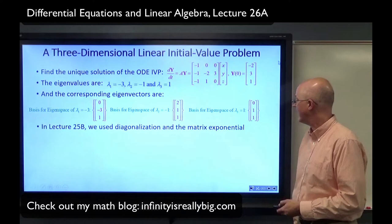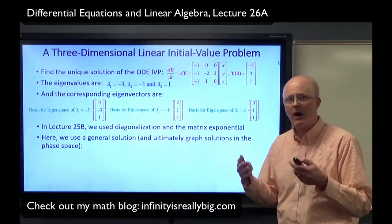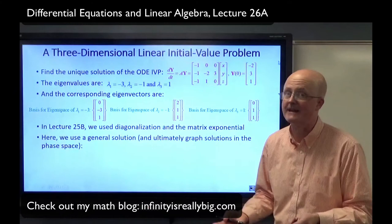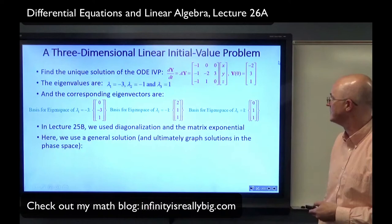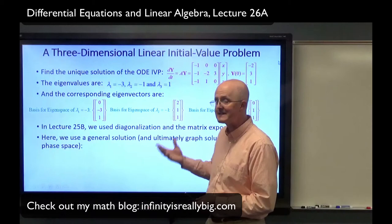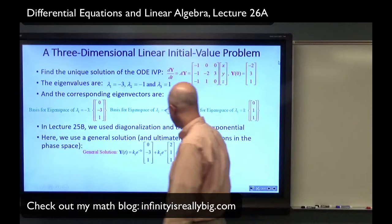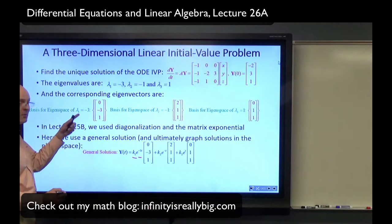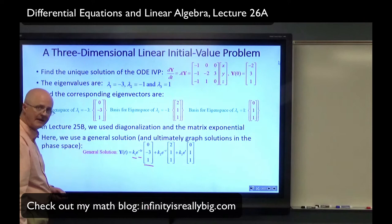Here we're going to do something different from using the matrix exponential — something where you theoretically can do it without technology. We can write down a general solution. For each eigenvalue-eigenvector pair, we take an arbitrary constant times e to the corresponding eigenvalue times t, as a scalar multiple of the corresponding eigenvector. For instance: K1 times e^(−3t) times the eigenvector (0, −3, 1) that corresponds to lambda 1 equals negative 3.